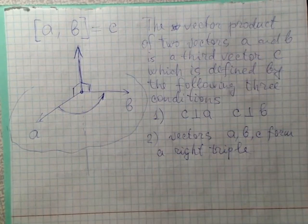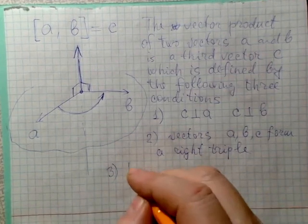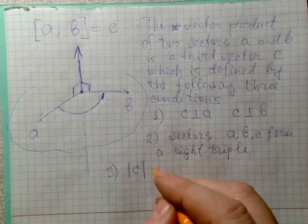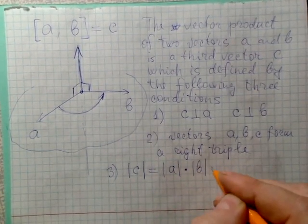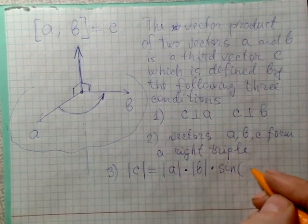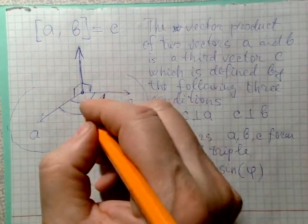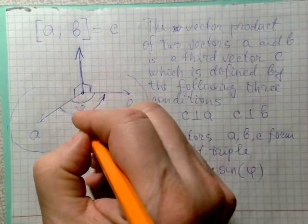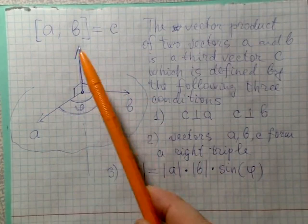Once we have chosen the direction of vector c, the last thing is to define its length. The third condition gives us a formula: the modulus of c equals the product of the modulus of a and the modulus of b, multiplied by the sine of the angle φ between vectors a and b.